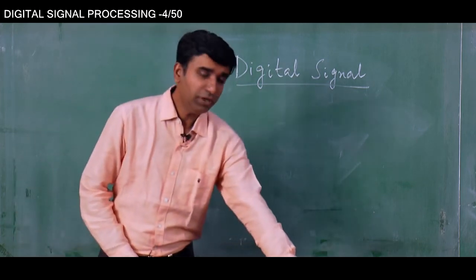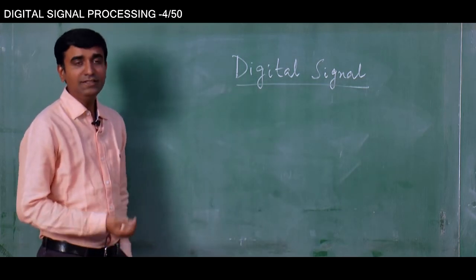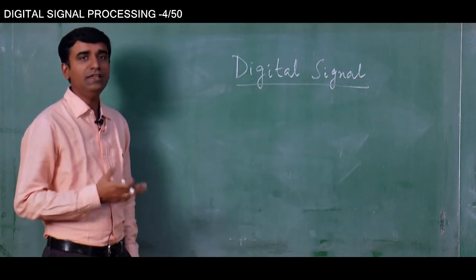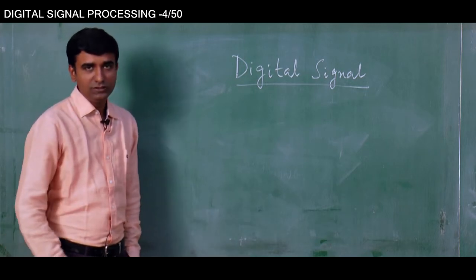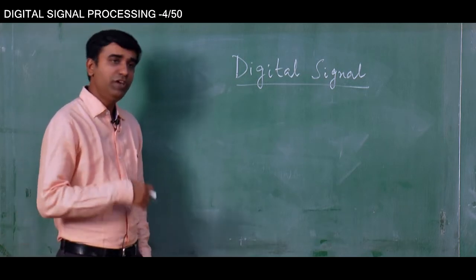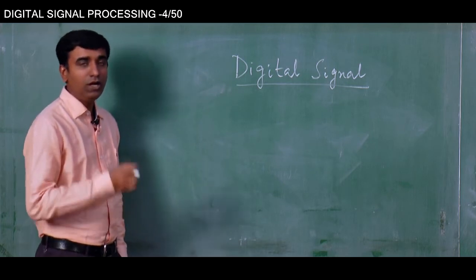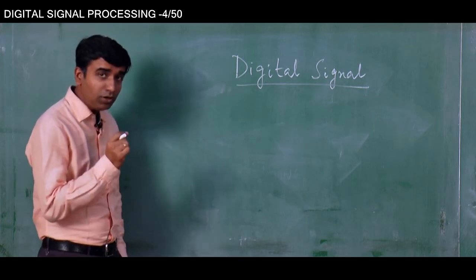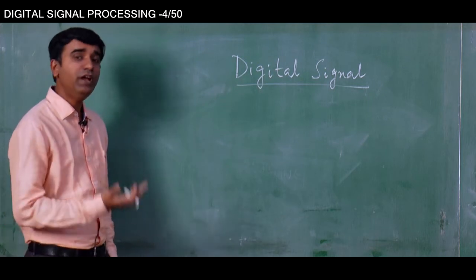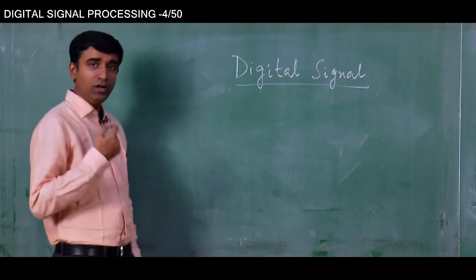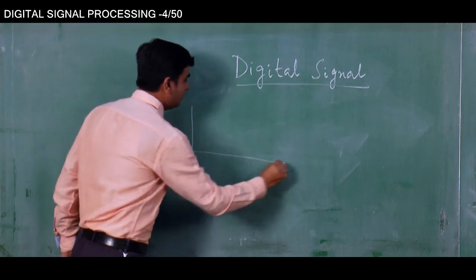Now, what is a digital signal? A digital signal is basically a discrete time signal. To be very specific, it is a discrete time, discrete value signal — but more importantly it is a discrete time signal. What is meant by that? Compared to an analog signal, let me draw one analog signal first.